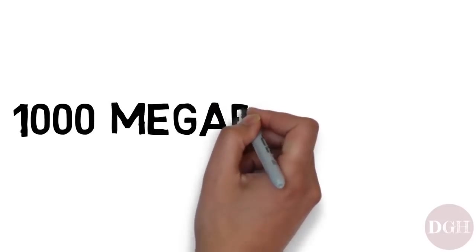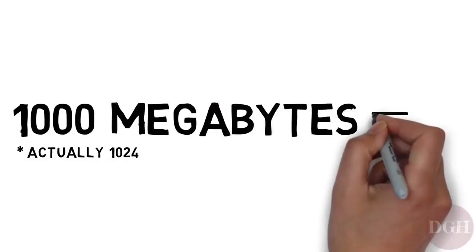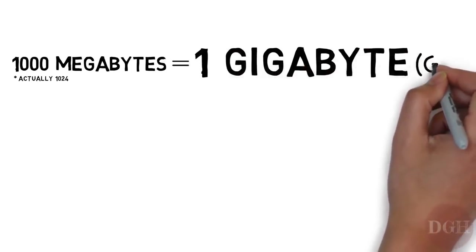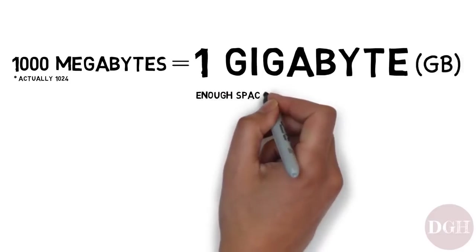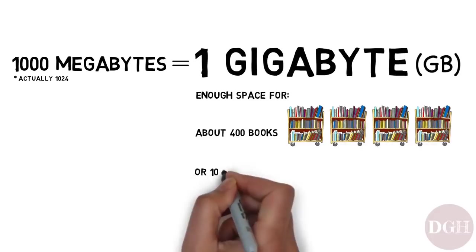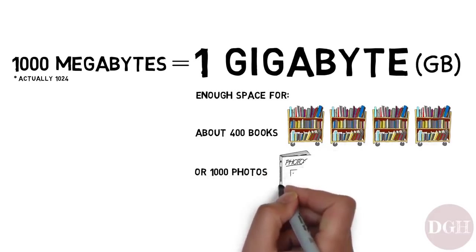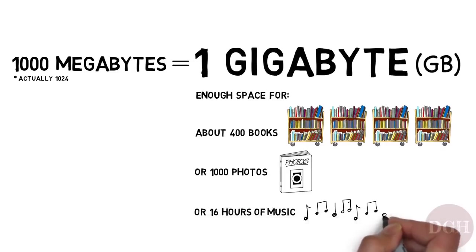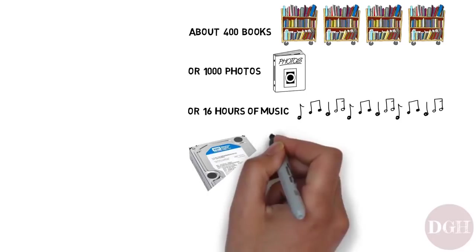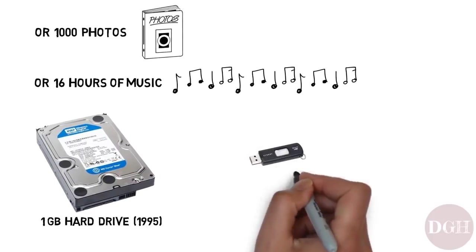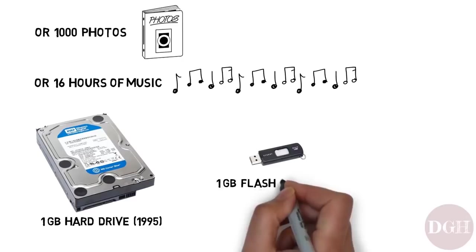A thousand megabytes is called a gigabyte. It's enough space to hold about 400 books, or a thousand pictures, or 16 hours of music. By the mid-1990s, you could buy a one gigabyte hard drive for a couple hundred bucks. Today, you can buy a one gigabyte flash drive for about five dollars.